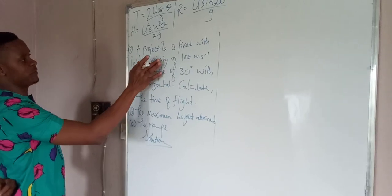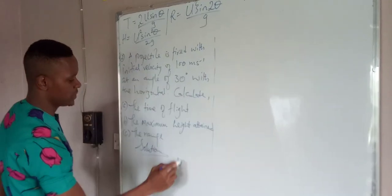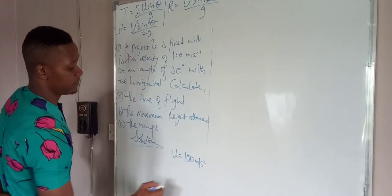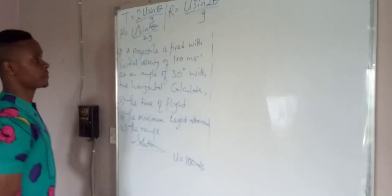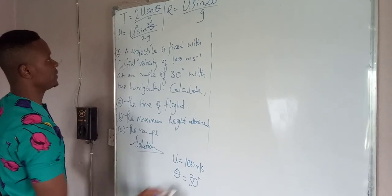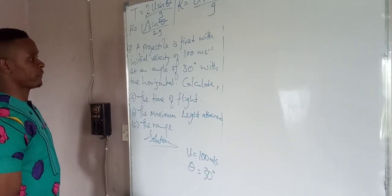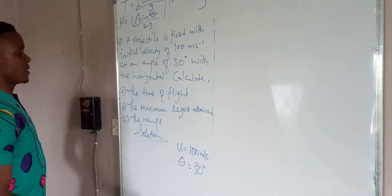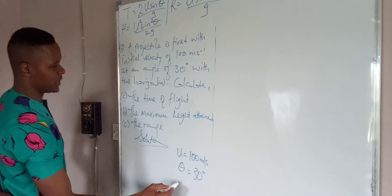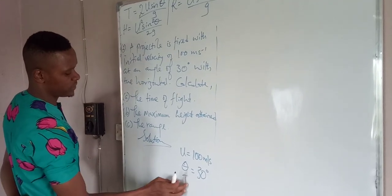Let's draft out the parameters given. Initial velocity u is 100 meters per second, angle of inclination 30 degrees. We have to calculate the time of flight which is t.